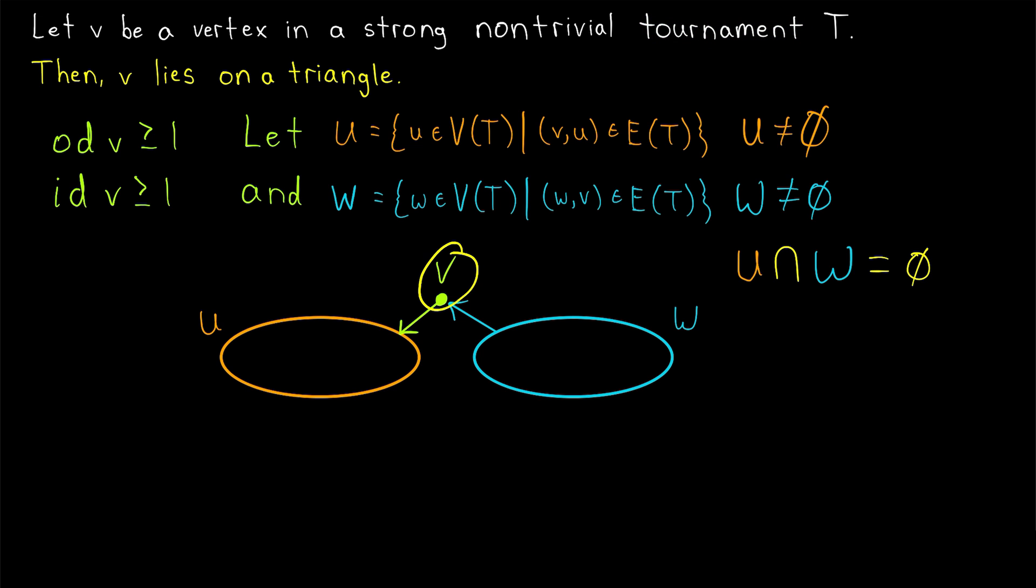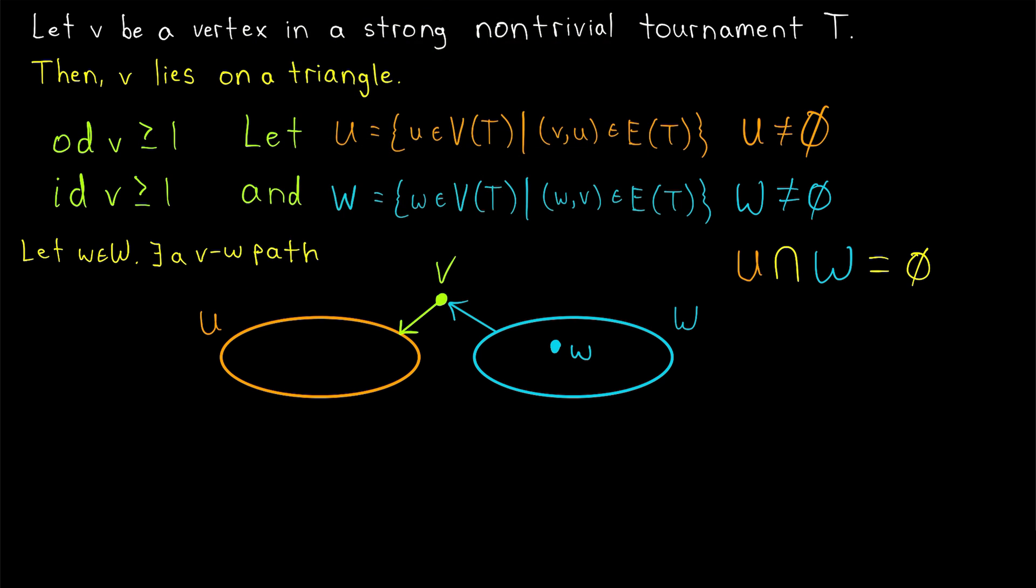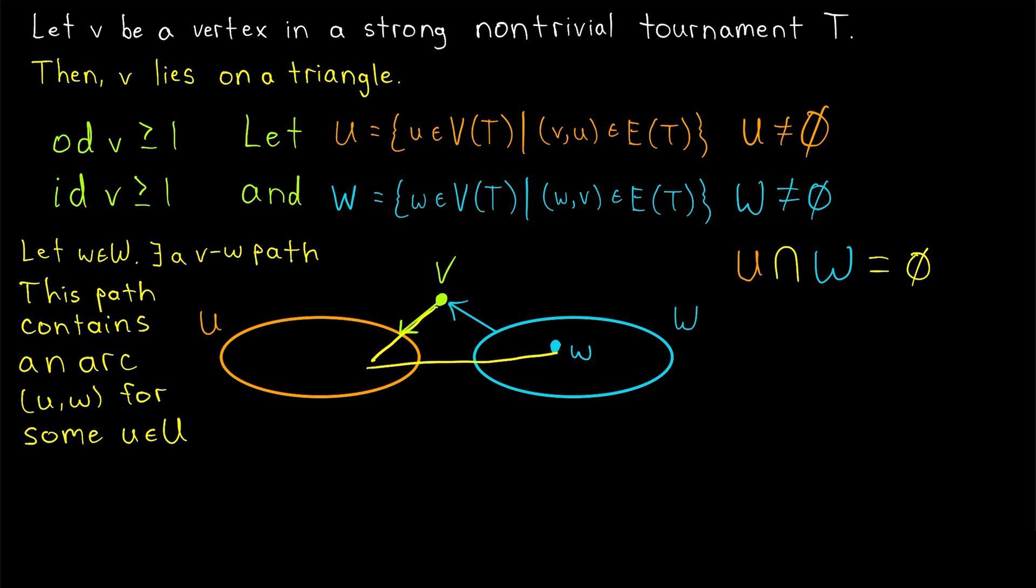Now, even though v isn't adjacent to any of the vertices in W, since this tournament is strong, we know there exists a path from v to any vertex in W. So we could say, take any vertex little w from the set W, we know there exists a vw path. So maybe we draw a vertex w in the set, and in yellow, we can draw that path. And now, with the help of our picture, you can see the triangle that we have forming. Remember, we're trying to prove that v lies on a triangle, a 3 cycle. The idea is that, remember,